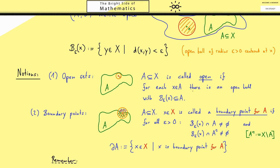Now you can remember an open set is exactly such a set where all the boundary points are outside of A.